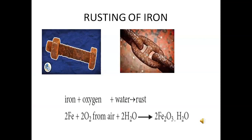Rusting of iron — you already studied in sixth standard that rusting is an example of a chemical change. Rusting is a key change that affects iron and iron articles, slowly destroying them. Since iron is used in making bridges, ships, cars, drum bodies, and many other articles, the monetary loss due to rusting is huge.